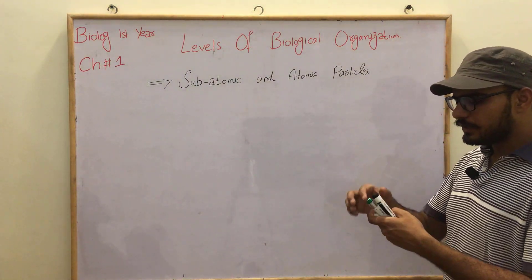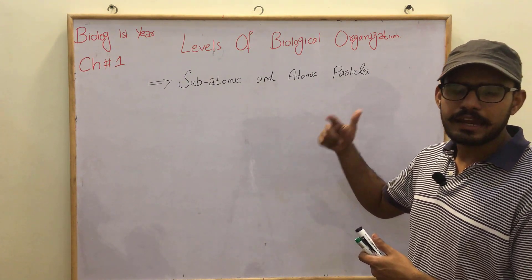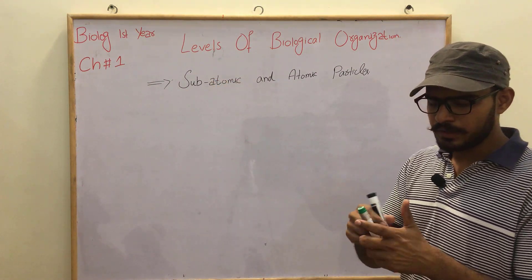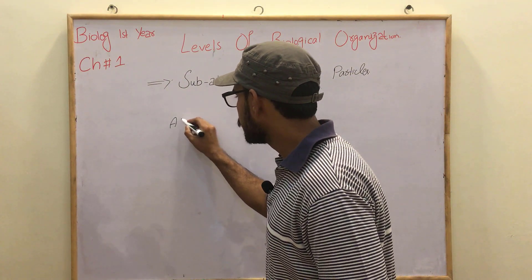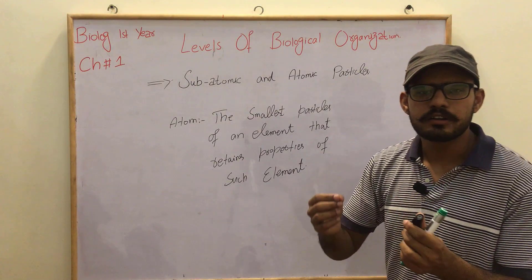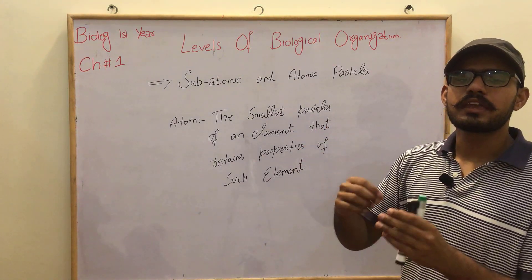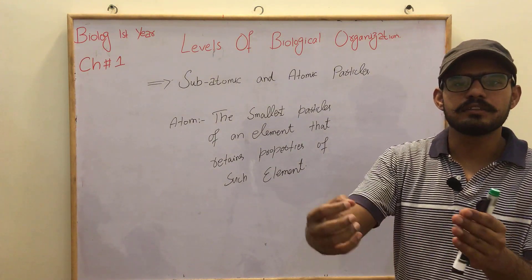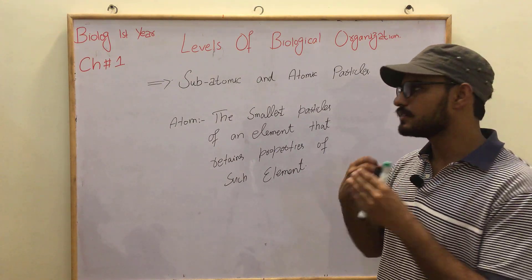First of all, let's look at the atomic level — atomic particles, or an atom. Then we will discuss all atomic particles. The atom's definition is: the smallest particle — a small particle for a very small element. It should be a small element that retains the specific properties of that element.